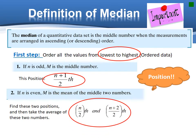The median is defined as the middle number when the measurements are arranged in order. So, firstly, order the values from the lowest to highest. If n is odd, find out the middle number. If n is even, find out the middle two numbers, and then take the average of the two numbers.